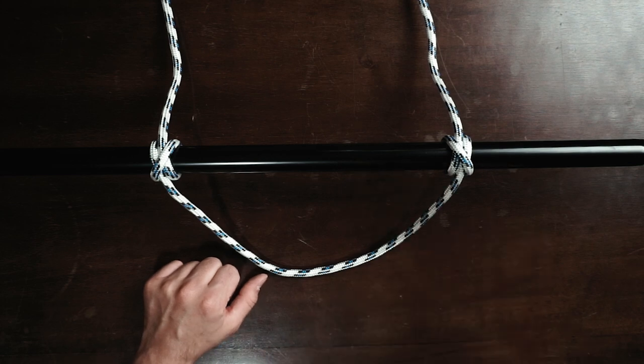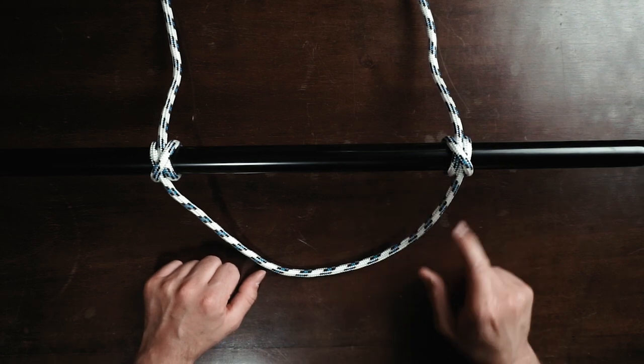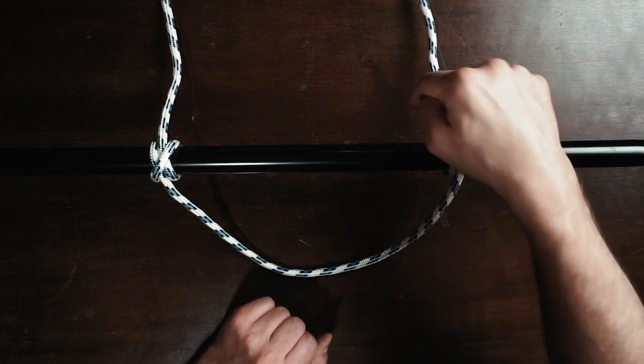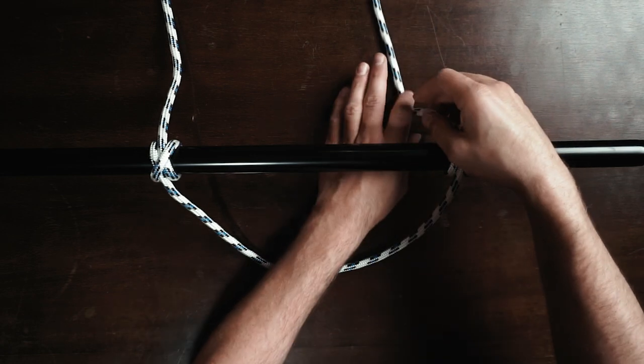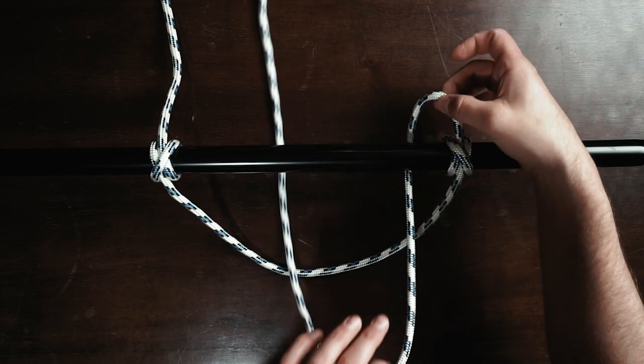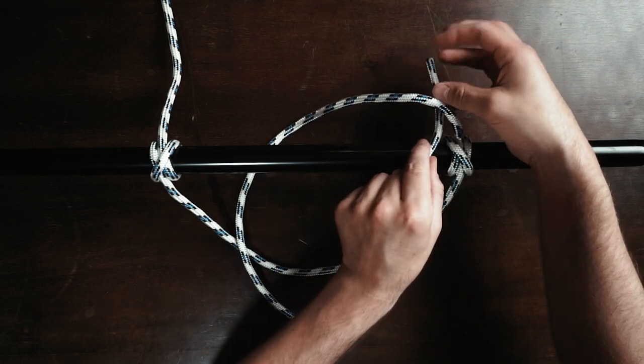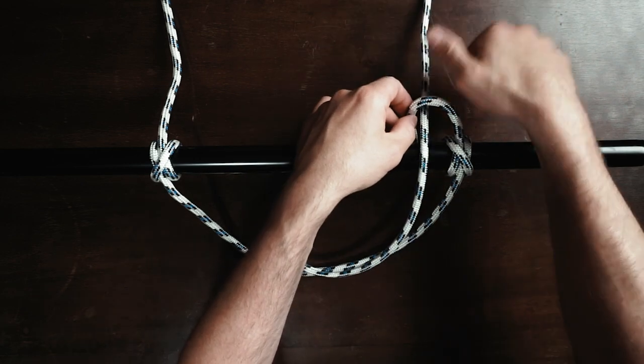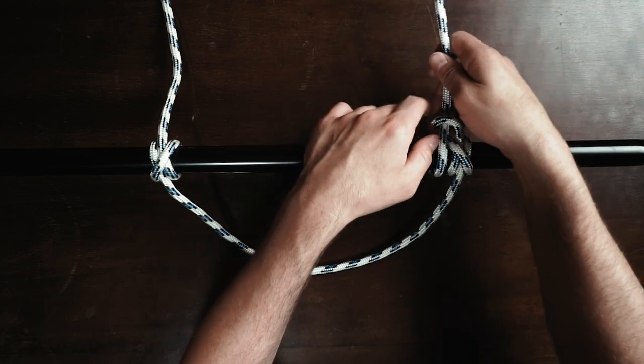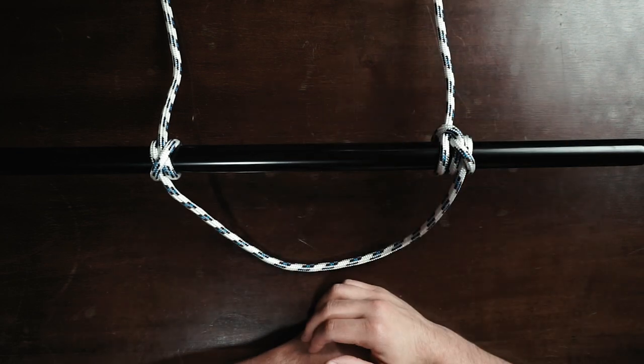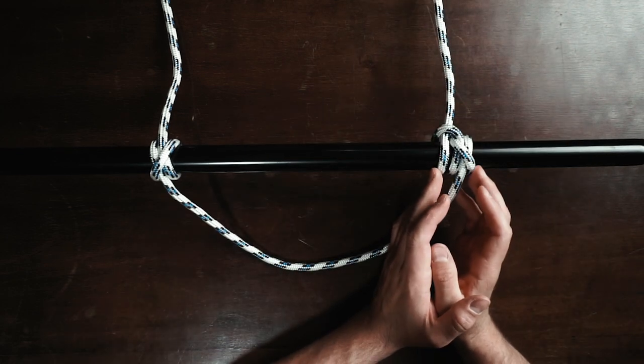And if I would like to make it super secure so this doesn't go off easily, I create another half hitch on this side maybe. So I have this loop here. Feed it inside this loop. So this makes the knot a little bit more secure.